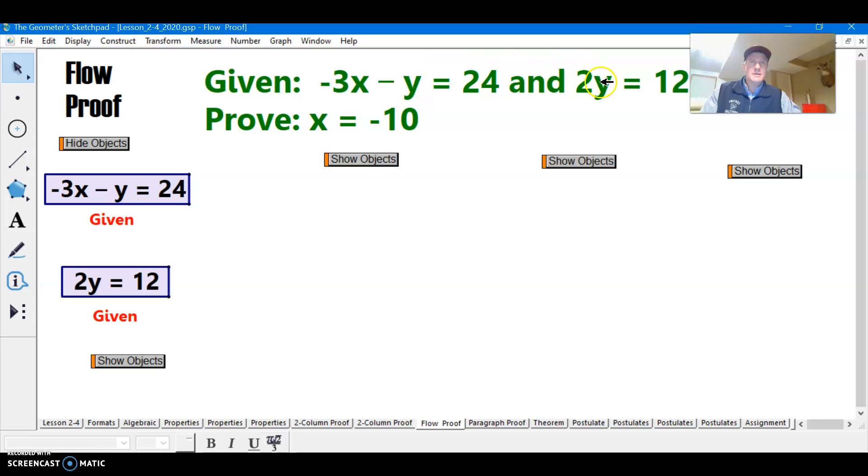So it's given that the two equations are true, and we're trying to prove that x is negative 10. Now, if I saw this one, I would want to probably make it simpler. Divide each side by 2. So we will do that. The result is y is equal to 6. We're using the division property of equality to come to that conclusion. This little arrow is kind of nice, because it shows you that this statement came from that statement.